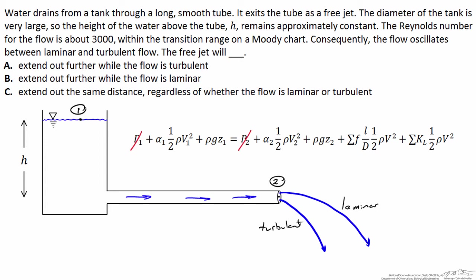The velocity at point one is essentially zero, the tank diameter is so large that the water level doesn't go down at an appreciable rate, and Z2 is equal to zero at the center line of our tube.